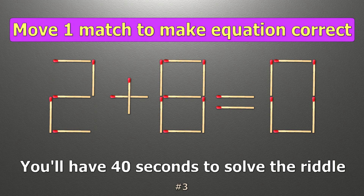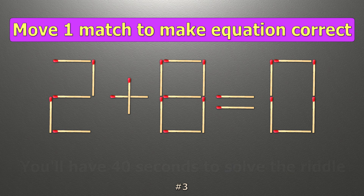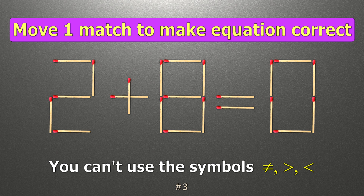We have the equality 2 plus 8 equals 0. Our equality is wrong. We need to move one match to make our equality correct.